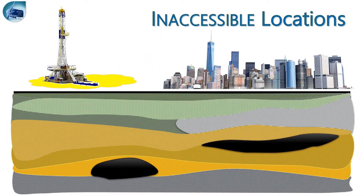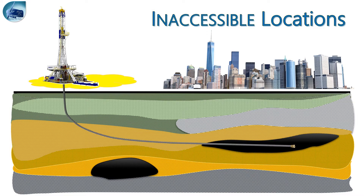Inaccessible locations. The first purpose for directional drilling is to have the capability of accessing pay zone targets even if the surface location is inaccessible. Inaccessibility can be residential areas, mountains, or any other constraints that don't allow locating a rig to drill a vertical well.